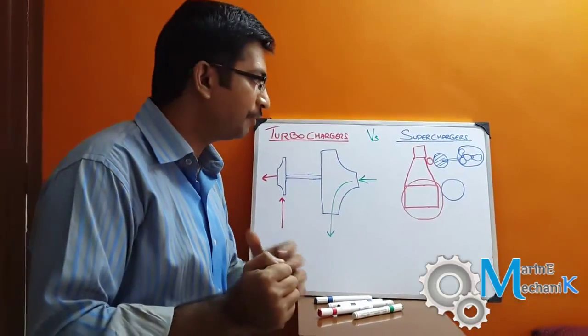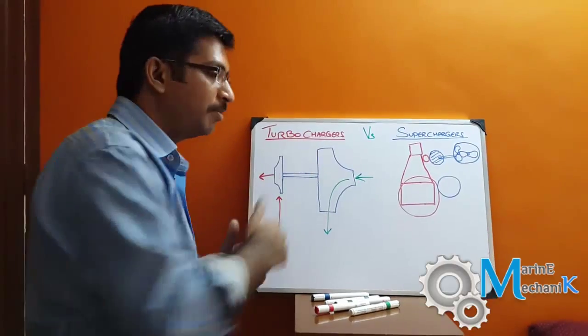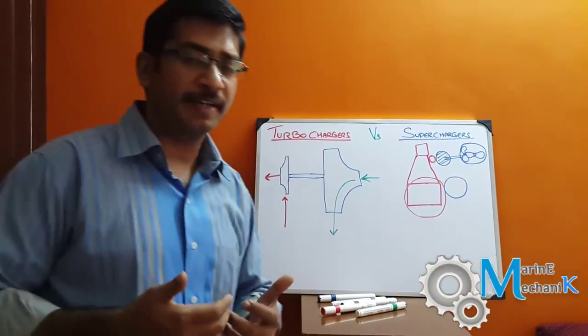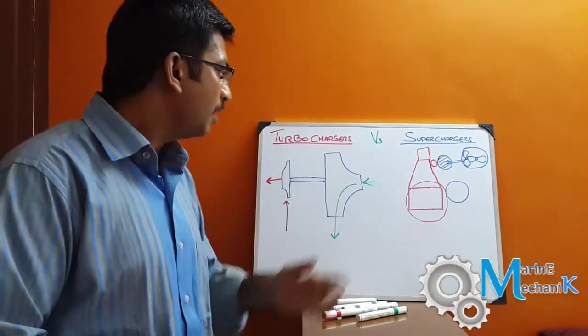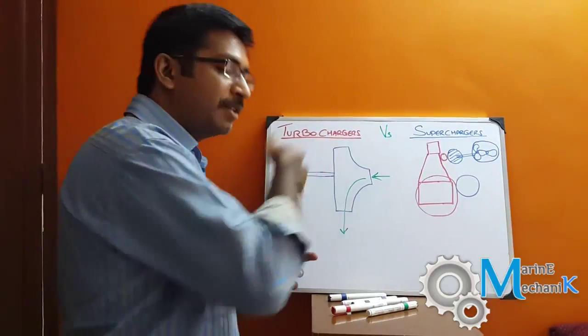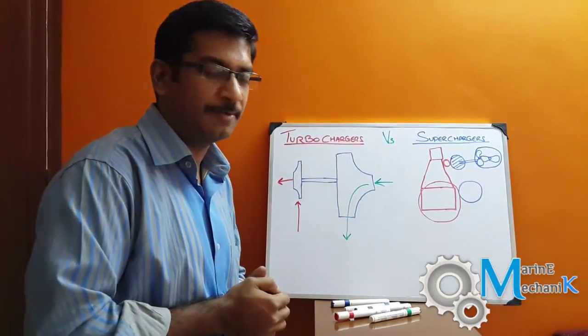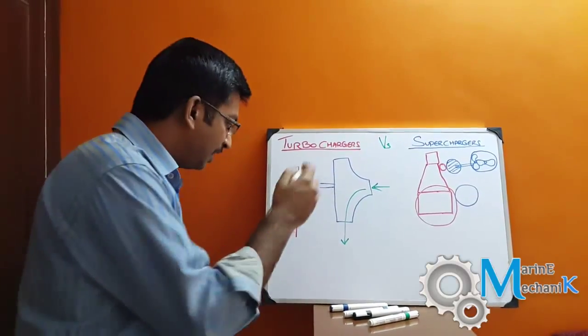Superchargers are simply ones which take drive from the engine itself—engine crankshaft or camshaft—and then supply air. Then later came the turbochargers. Since the amount of exhaust gas available from the main engine is enormous, they wanted to utilize the exhaust gas energy to supply charged air or scavenged air.